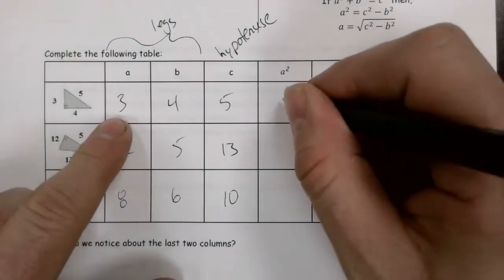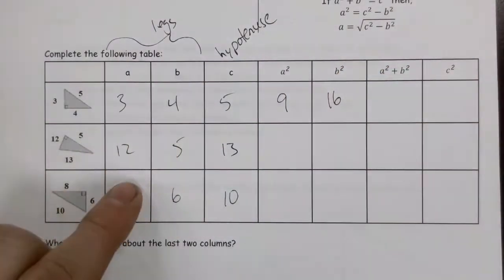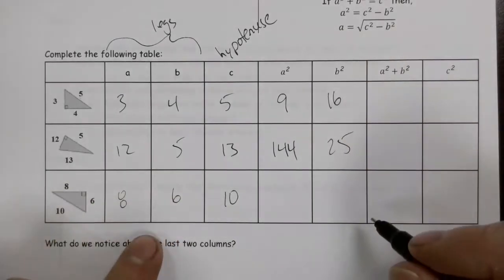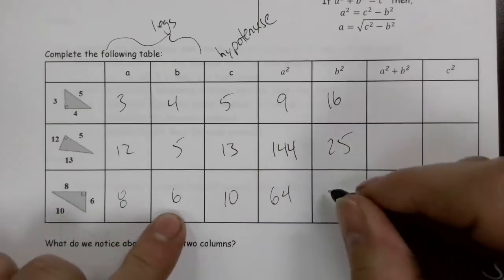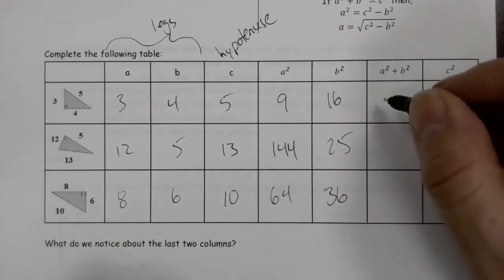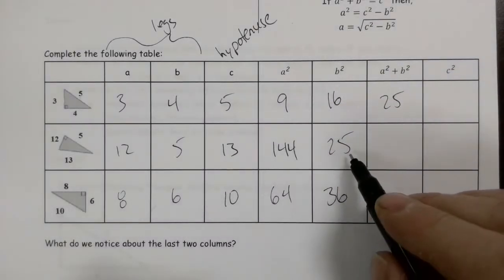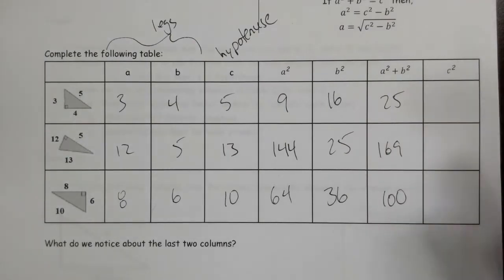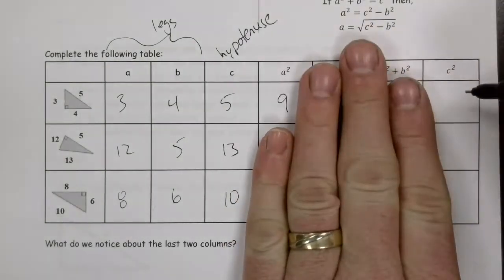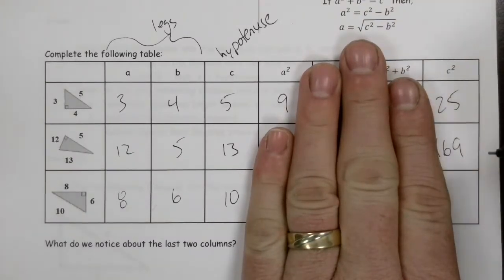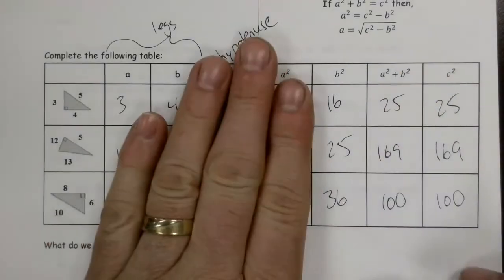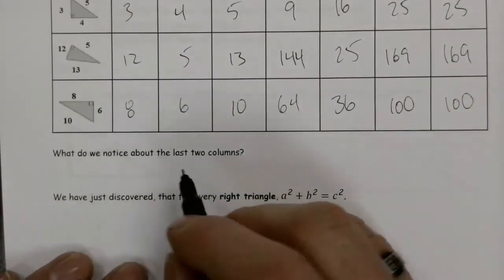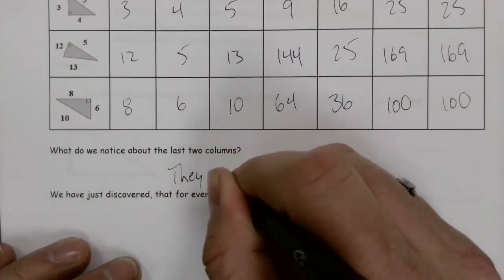Let's verify: a squared is nine, b squared is 16 — nine plus sixteen gives 25. A squared is 144, b squared is 25 — 144 plus 25 gives 169. A squared is 64, b squared is 36 — 64 plus 36 gives 100. Now squaring the hypotenuses: five squared is 25, thirteen squared is 169, ten squared is 100. Notice the last two columns are equal — this shows the Pythagorean Theorem does in fact work for these three triangles.